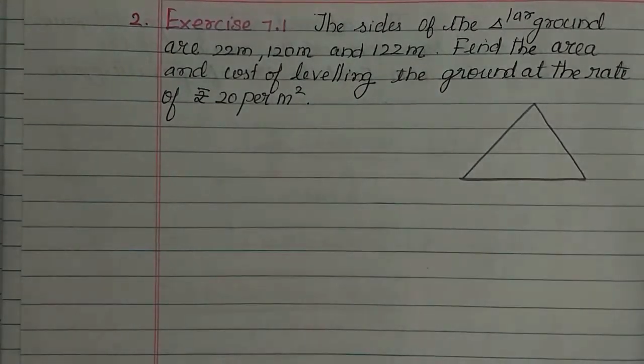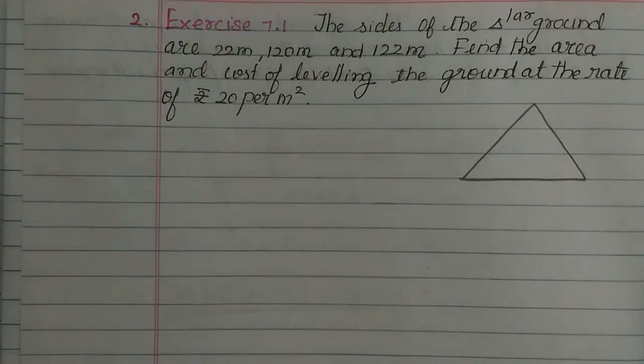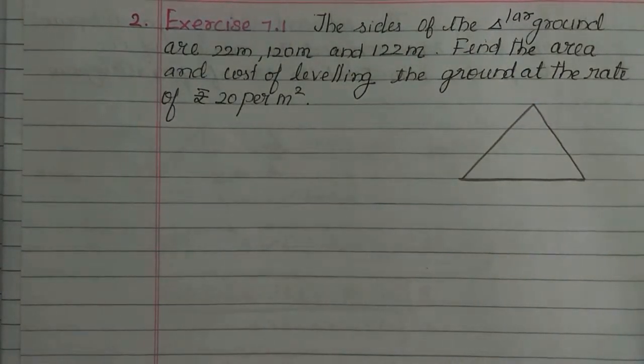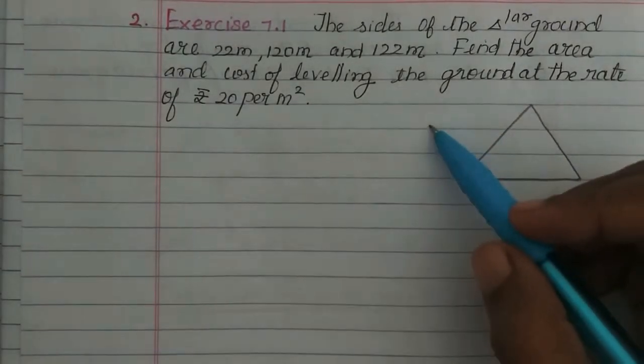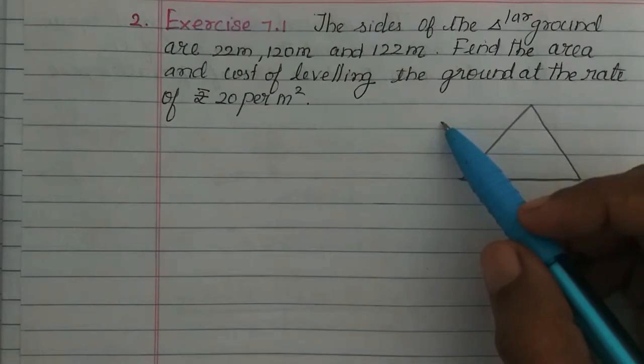Hi students, in this video we will solve Exercise 7.1 part 2. The sides of the triangular ground are 22m, 120m and 122m. Find the area and cost of leveling the ground at the rate of Rs. 20 per meter square.